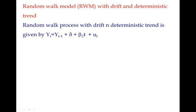Random walk process with drift and deterministic parameter is given by Yt = Yt-1 + δ + β₂t + ut.